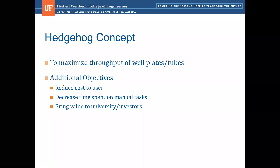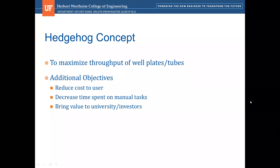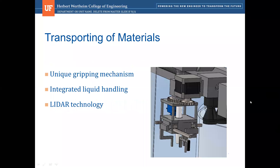Our hedgehog concept was to maximize throughput of web plates and tubes. Essentially, we wanted to free up scientists to allow automation to do the more labor-intensive tasks. Additional objectives were to reduce cost to the user, decrease time spent on manual tasks, and bring value to the university and to other investors.